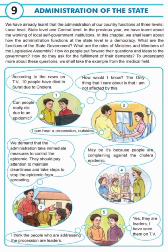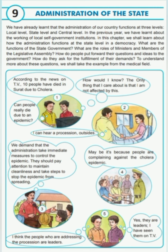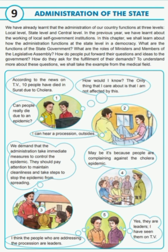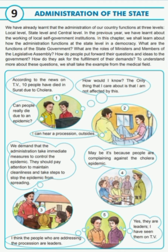Hello students, this is Asma Bhavani and I teach in Modern English High School. Today I am going to explain Grade 7 Social Science Chapter 9: Administration of the State. We have already learnt that the administration of our country functions at three levels — local level, state level and central level. In the previous year, we learnt about the working of local self-government institutions. In this chapter, we shall learn about how the administration functions at the state level in a democracy.